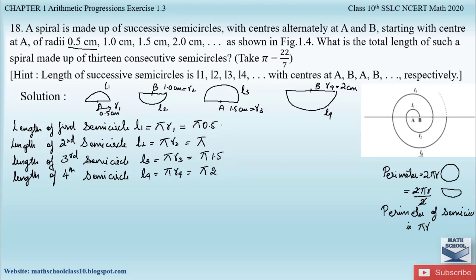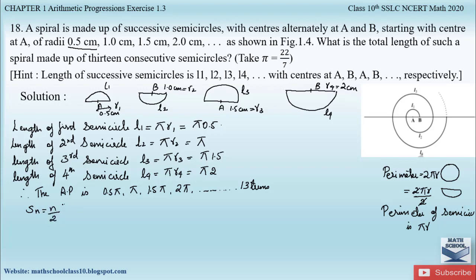These are the four semicircles shown in the figure. Likewise we have to find the length up to the 13th semicircle. Therefore let us write down the AP. The AP is: 0.5π, π, 1.5π, 2π, and this continues. We have to find the total length for 13 terms. Since the last term is not given but the number of terms is given, we use the formula Sn = n/2 × (2a + (n−1)d).